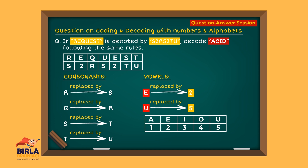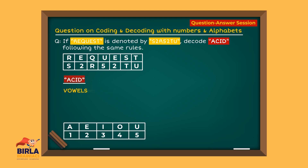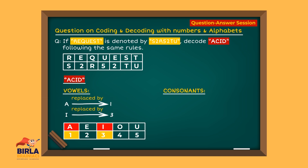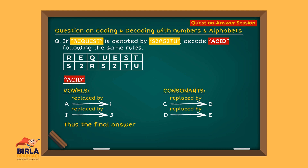For consonants, each is replaced by the next consonant — R is replaced by S, Q is replaced by R, and so on. Vowels in 'acid' are A and I, so the numbers would be 1 and 3. Consonants in 'acid' are C and D, so C will be replaced by D and D will be replaced by E. Thus, the final answer is 1, D, 3, E.